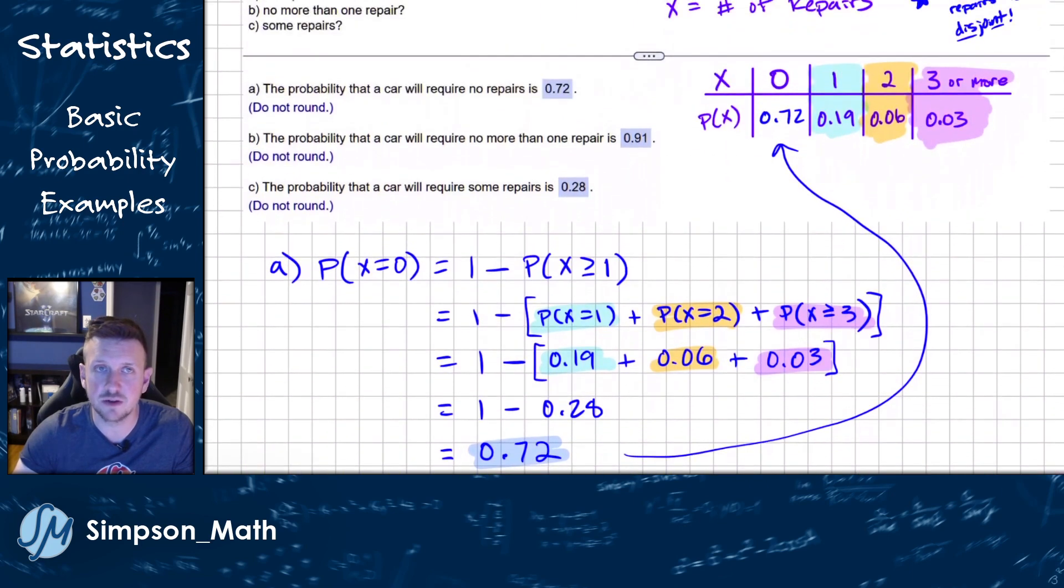So 72% of cars, according to this, would need no repairs. Next, what if we select a random car and it requires no more than one repair?